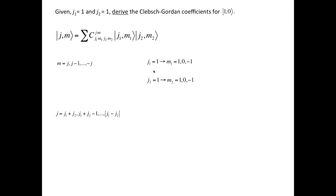In our particular example, J1 and J2 are both equal to 1. Therefore, the possible values of M1 and M2 are both 1, 0, and minus 1. Also, given our values of J1 and J2, the possible values of J are 2, 1, and 0 with the corresponding values of M of negative 2, negative 1, 0, 1, and 2.